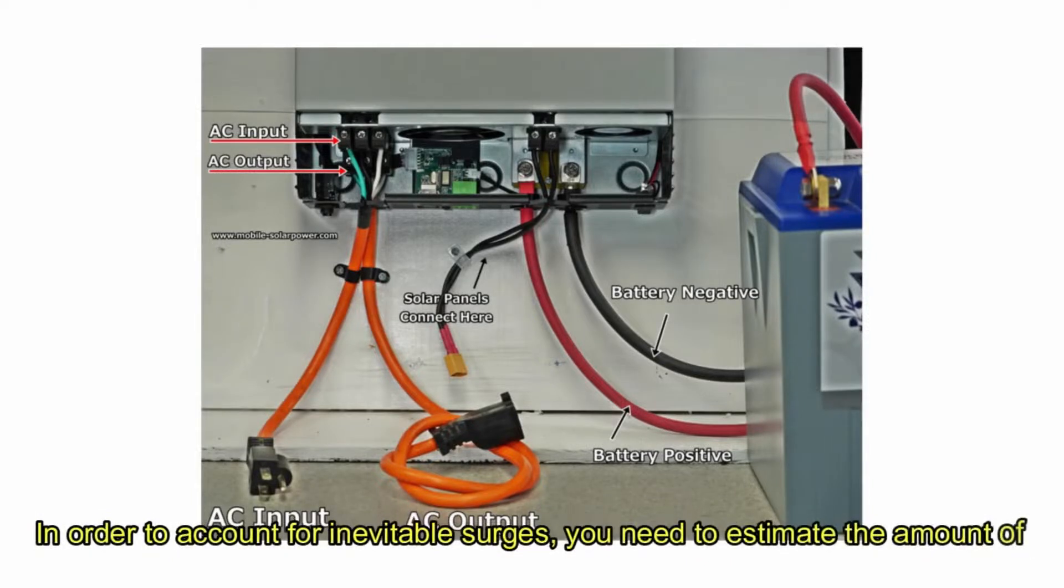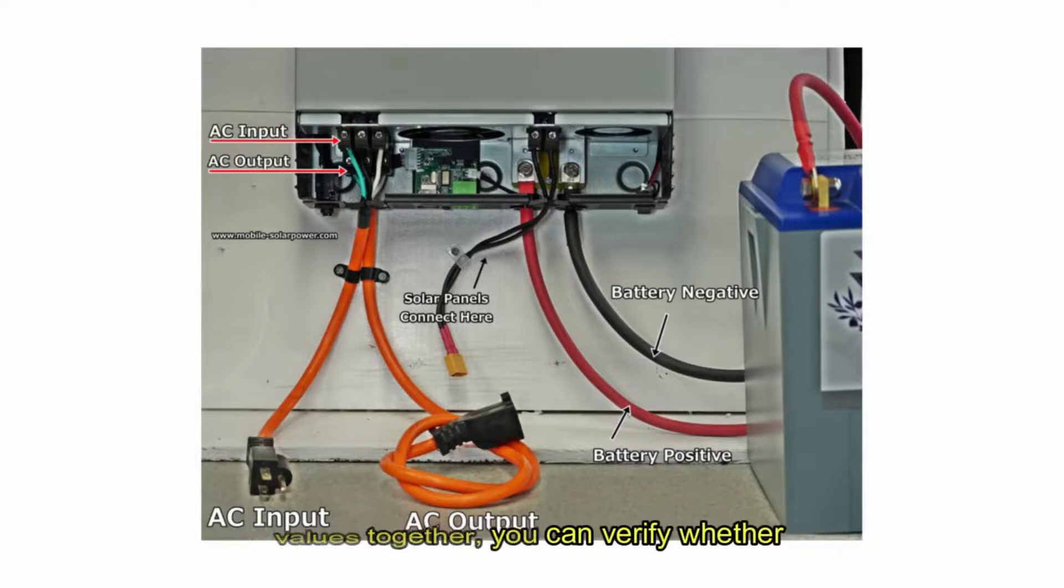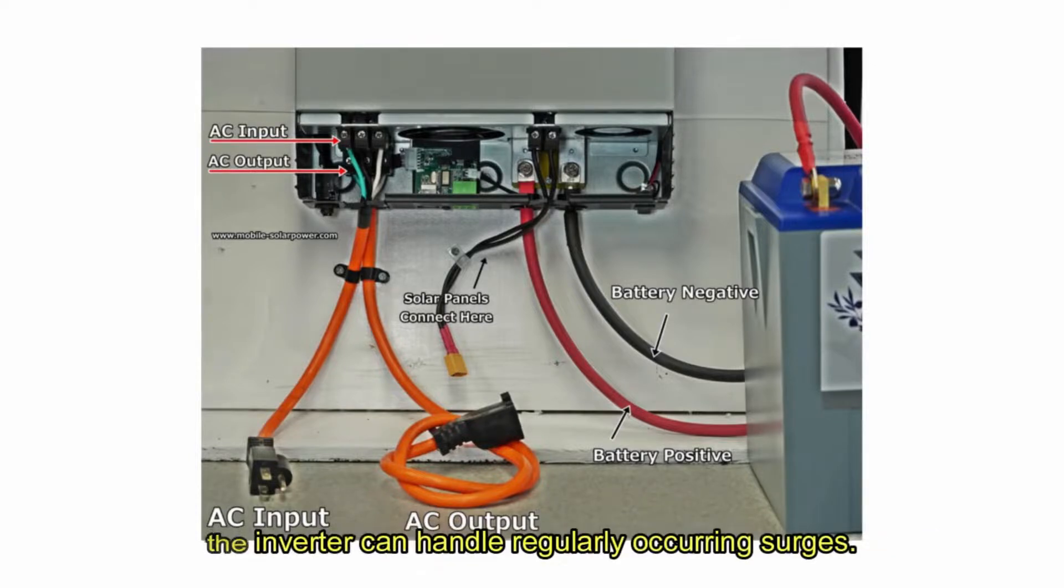In order to account for inevitable surges, you need to estimate the amount of power the inverter will be providing just prior to the surge and then estimate what the power draw will be when the surge happens. By adding these values together, you can verify whether the inverter can handle regularly occurring surges.